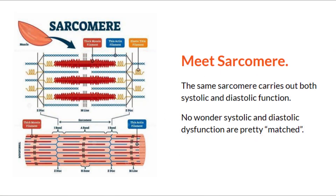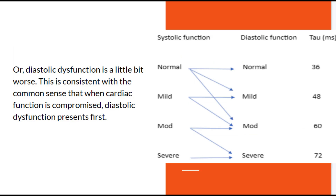The same sarcomere carries out both systolic and diastolic function, so it is no wonder that both systolic and diastolic dysfunction are pretty well matched. Both are ATP-consuming processes, and diastolic dysfunction may be a little bit worse. This is consistent with the common sense that when cardiac function is compromised, diastolic function is affected first.